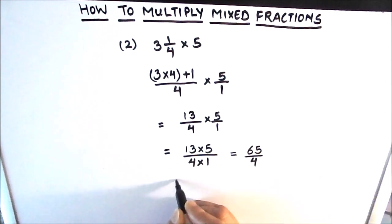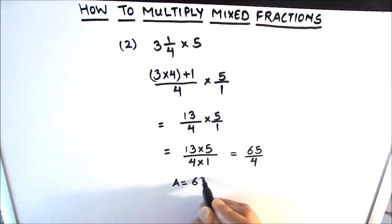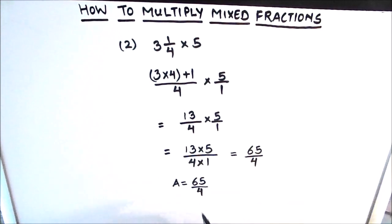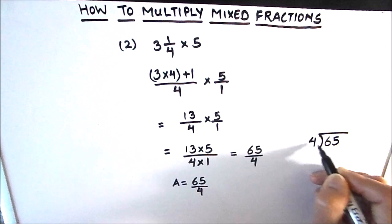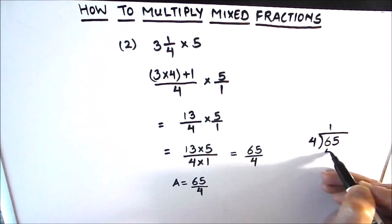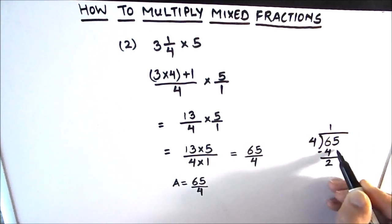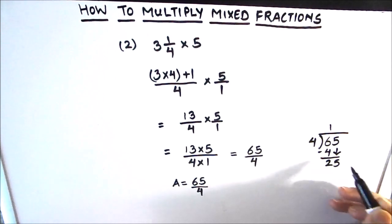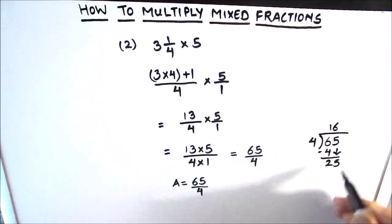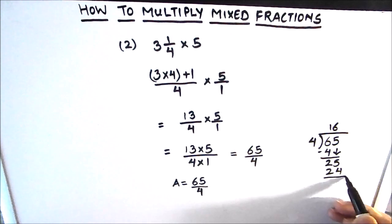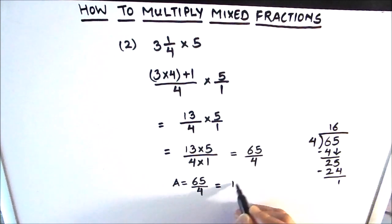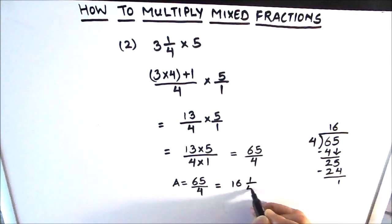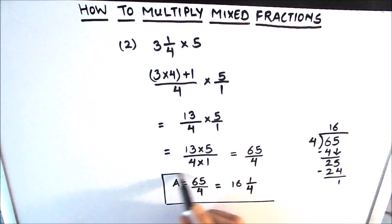13 times 5 is 65 and 4 times 1 is 4, so our final answer is 65 divided by 4. We can also convert this into a mixed fraction by dividing 65 by 4. 4 times 16 is 64, with a remainder of 1, so the mixed fraction equivalent to 65 upon 4 is 16 and 1/4. This is our final answer.